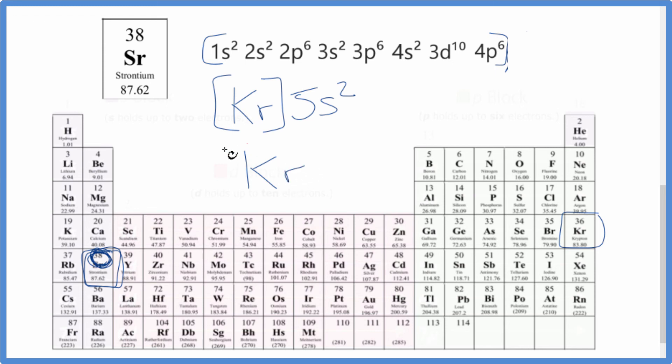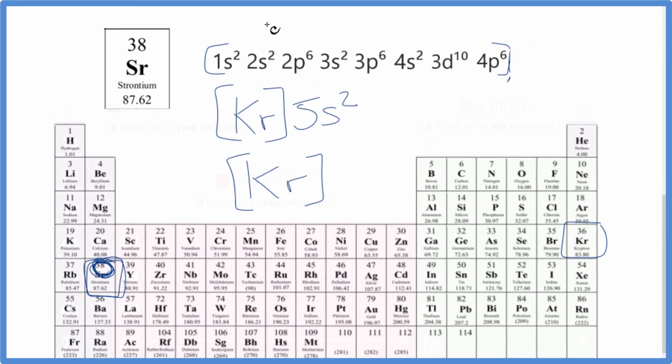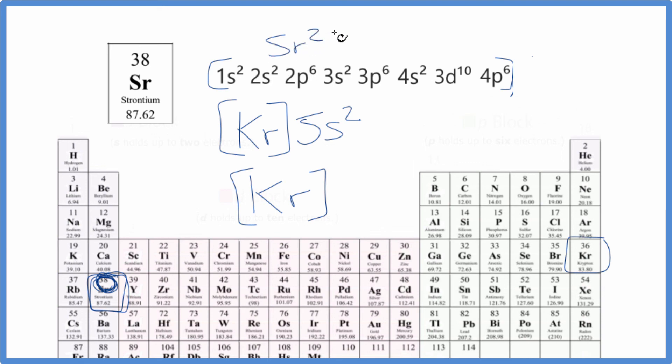You could write it like Kr, it's the same configuration as Kr. So it's very stable because it's like a noble gas. If you wanted to write the whole electron configuration out for Sr2+, that would be this right here.